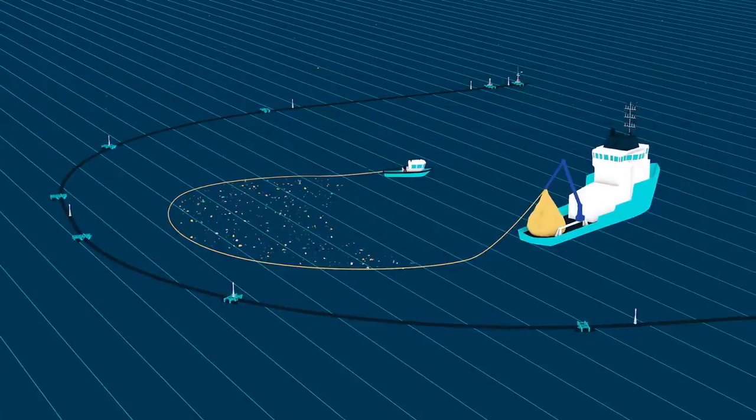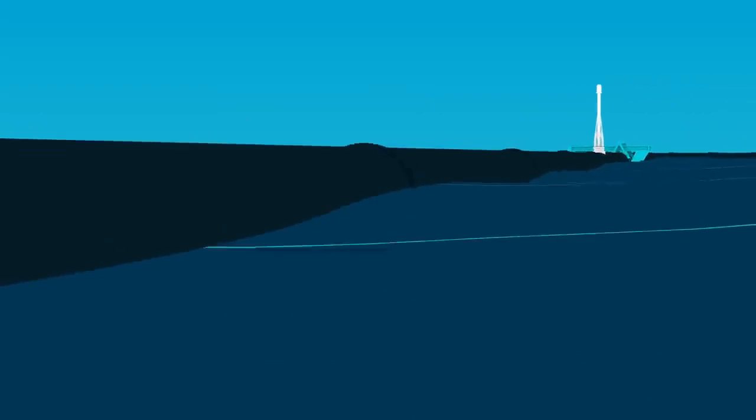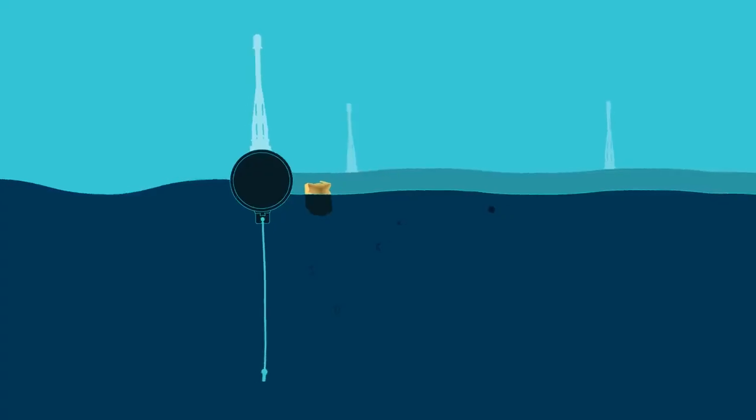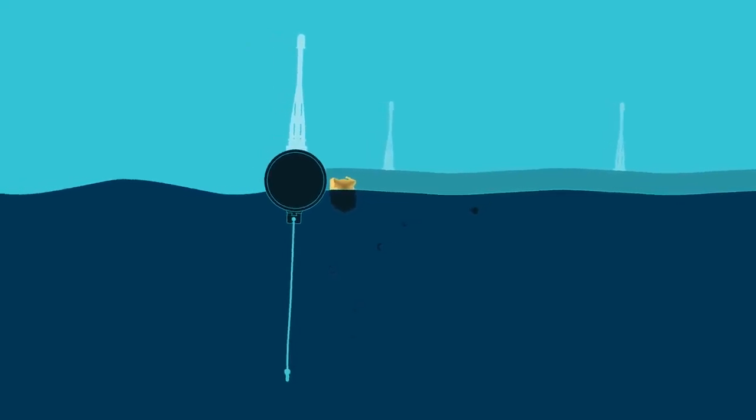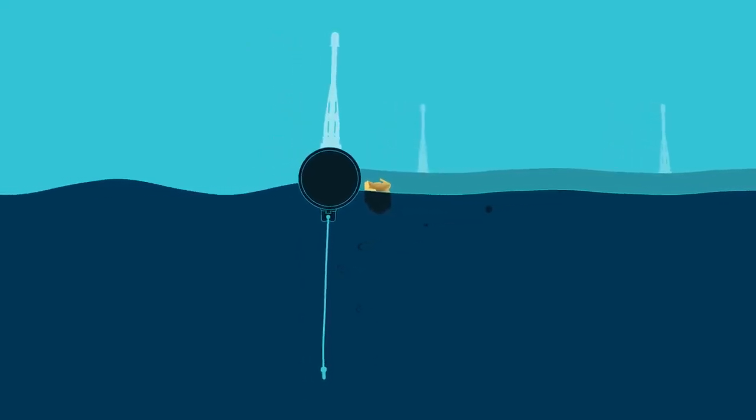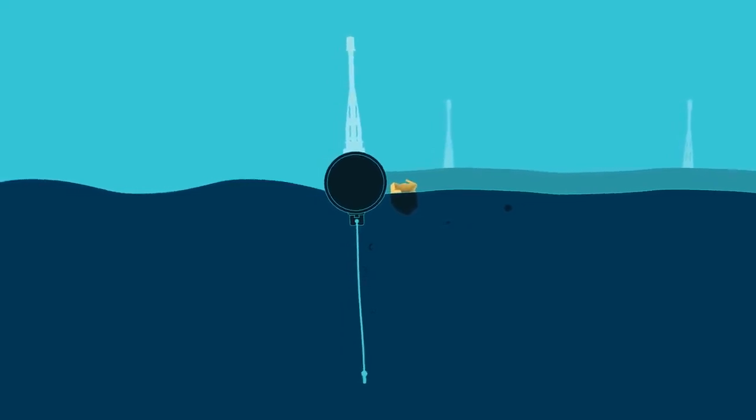The system consists of a 600-meter-long floater and a 3-meter-deep skirt attached below. The floater provides buoyancy to the system and prevents plastic from flowing over it, while the skirt prevents smaller particles from escaping underneath.